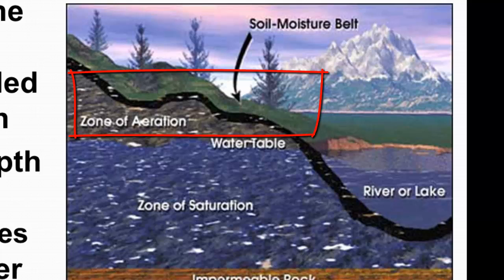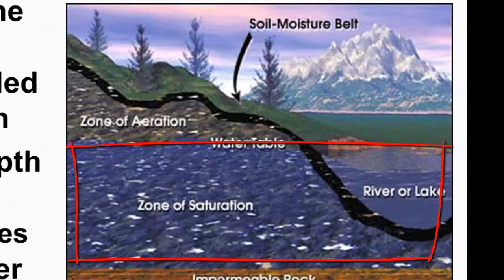The zone of aeration has all the little air spaces, which allows water to infiltrate from rain into the ground. Below that, at a certain depth, we start to see where the water is filling in, and this is called the zone of saturation.